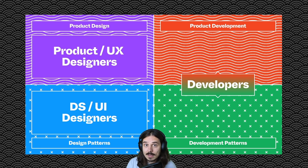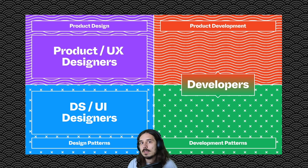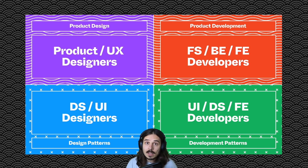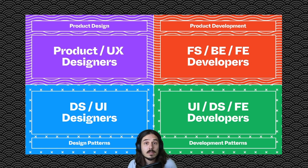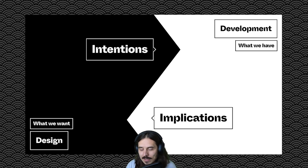You might have similar granularity on the design side — UX designers building out the future of the product, as well as design-system-focused designers and UI designers building out components and patterns to support the product design effort. Ideally, no matter what scenario you're in, you get to a point where individuals are focused and dedicated to these different concerns. When this is all working really well together, you have to start thinking about communication across those areas.